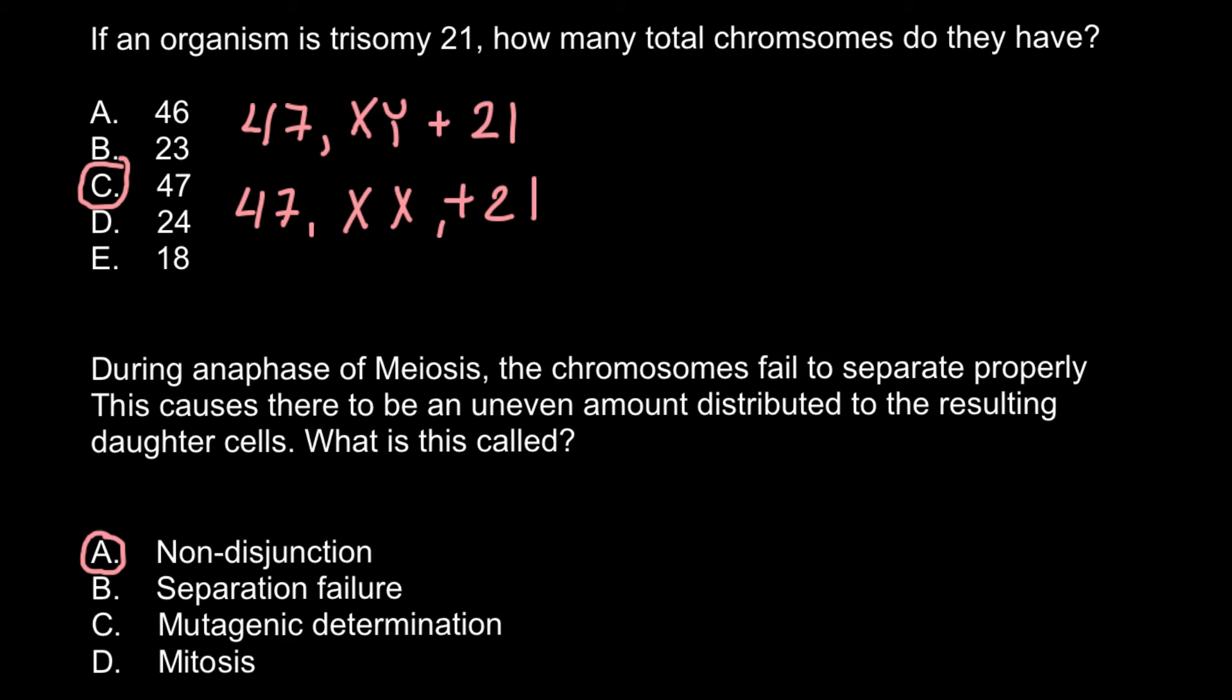So we can say that non-disjunction during meiosis of chromosome 21 may cause trisomy 21. The same non-disjunction of chromosome 21 also leads to monosomy of 21 when one chromosome would be lost.